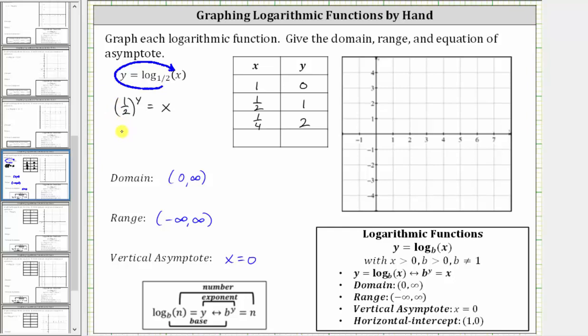So we could use the equation two raised to the power of negative one raised to the power of y equals x. Remember, when we have powers raised to powers, we multiply the exponents. We can rewrite this as two raised to the power of negative y equals x.